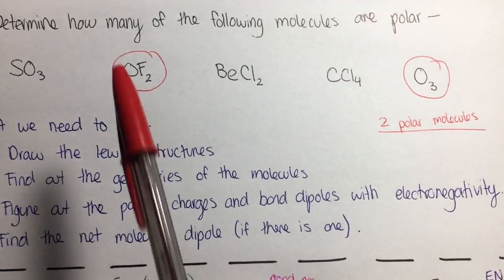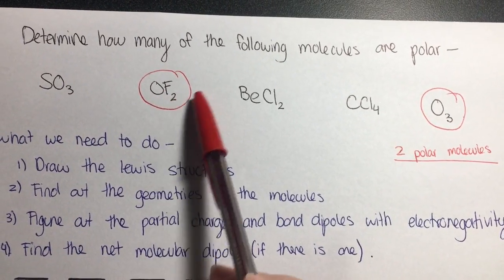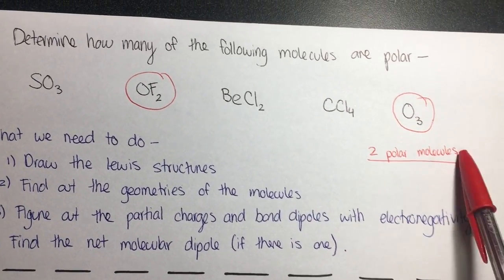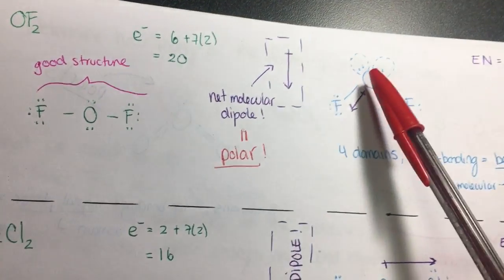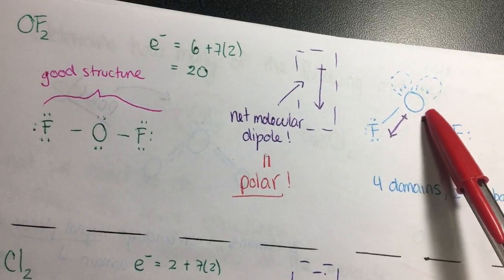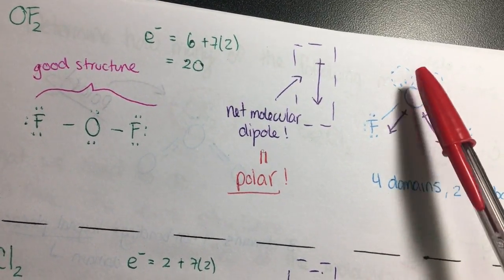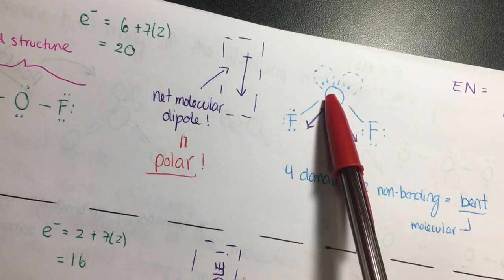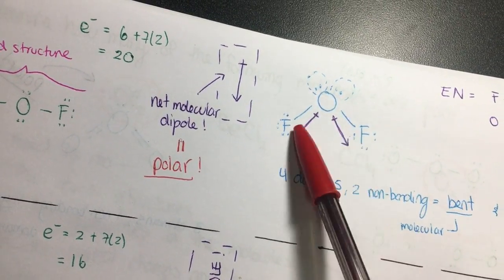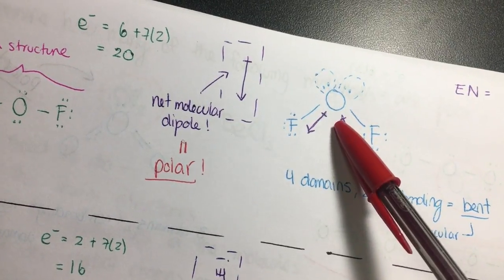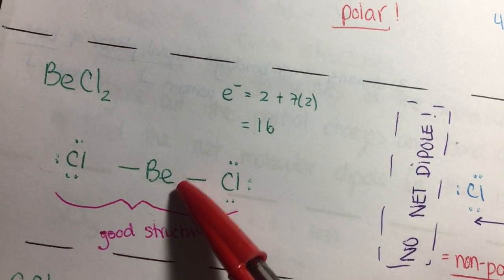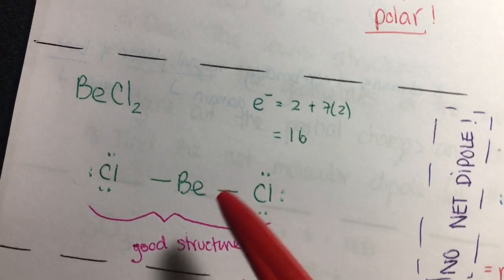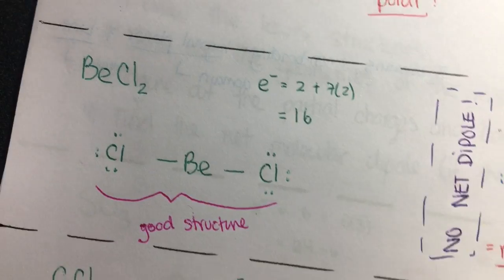After doing all that, we go back and find that OF₂ is polar and O₃ is polar, giving us two polar molecules. Some common mistakes to watch for: forgetting that non-bonding pairs go together and not one on top and one on the bottom — that's not how four-domain geometry works. People mistakenly think OF₂ is linear and that the dipoles cancel, but it's not. Also, a common mistake is forgetting that beryllium is an exception to the octet rule, which is what makes BeCl₂ linear.